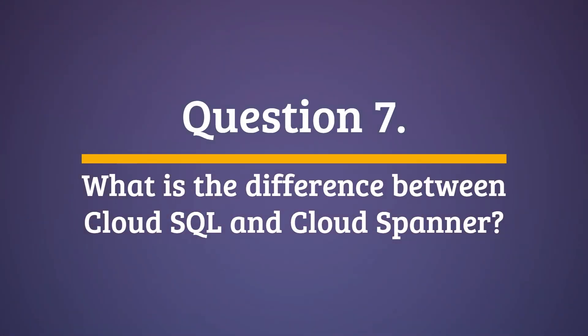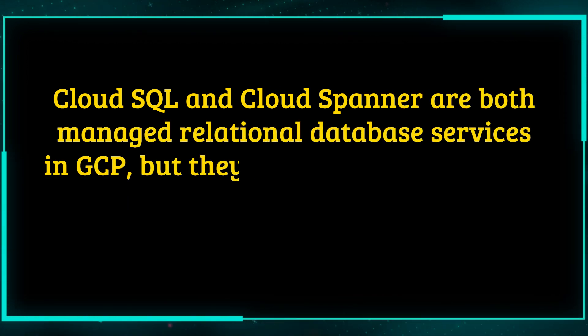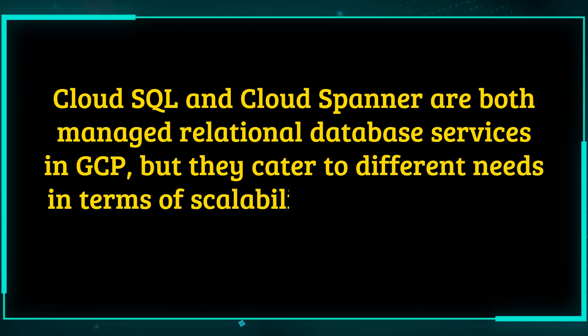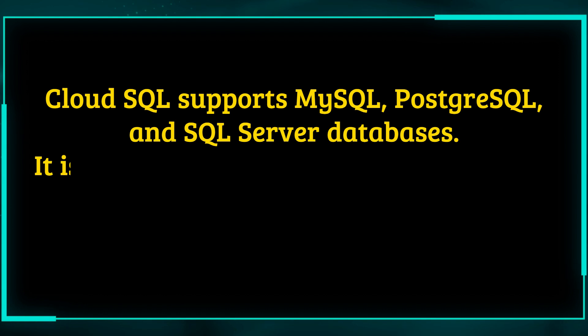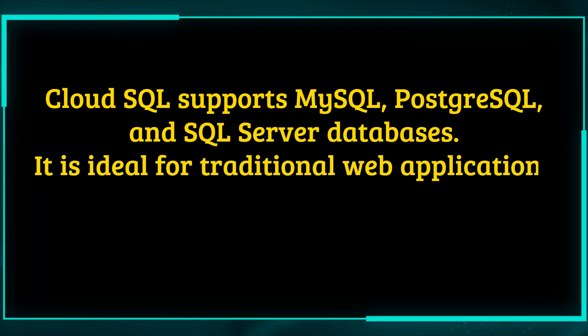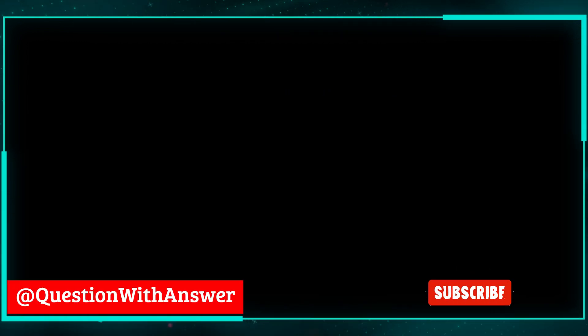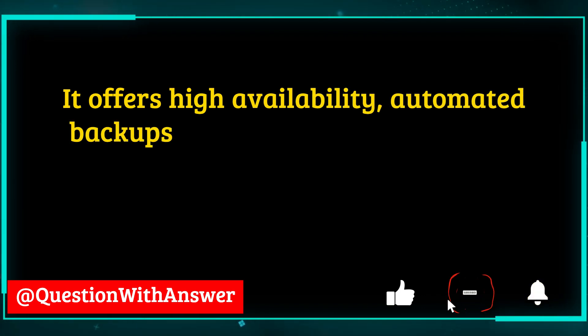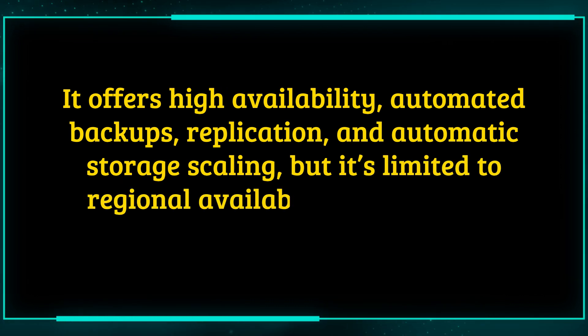Question 7. What is the difference between Cloud SQL and Cloud Spanner? Cloud SQL and Cloud Spanner are both managed relational database services in GCP, but they cater to different needs in terms of scalability, availability, and consistency. Cloud SQL supports MySQL, PostgreSQL, and SQL Server databases. It is ideal for traditional web applications and workloads that require compatibility with existing RDBMS systems. It offers high availability, automated backups, replication, and automatic storage scaling, but it's limited to regional availability and vertical scaling.